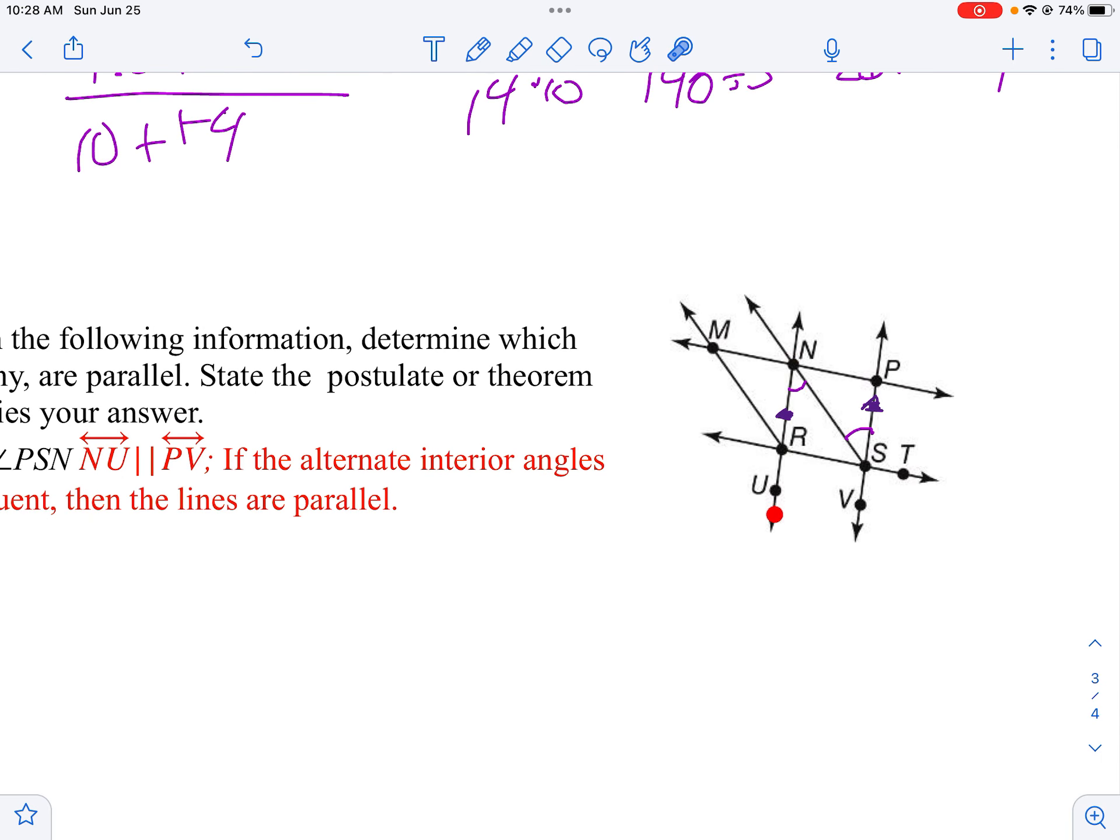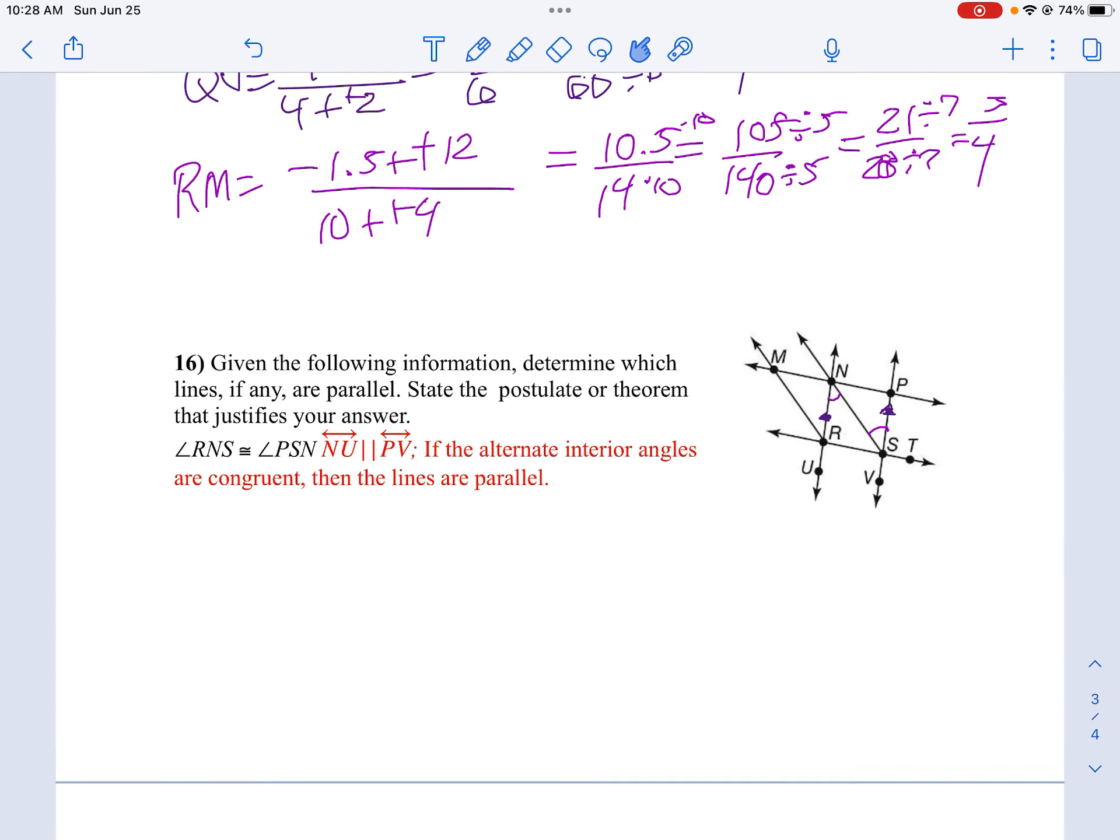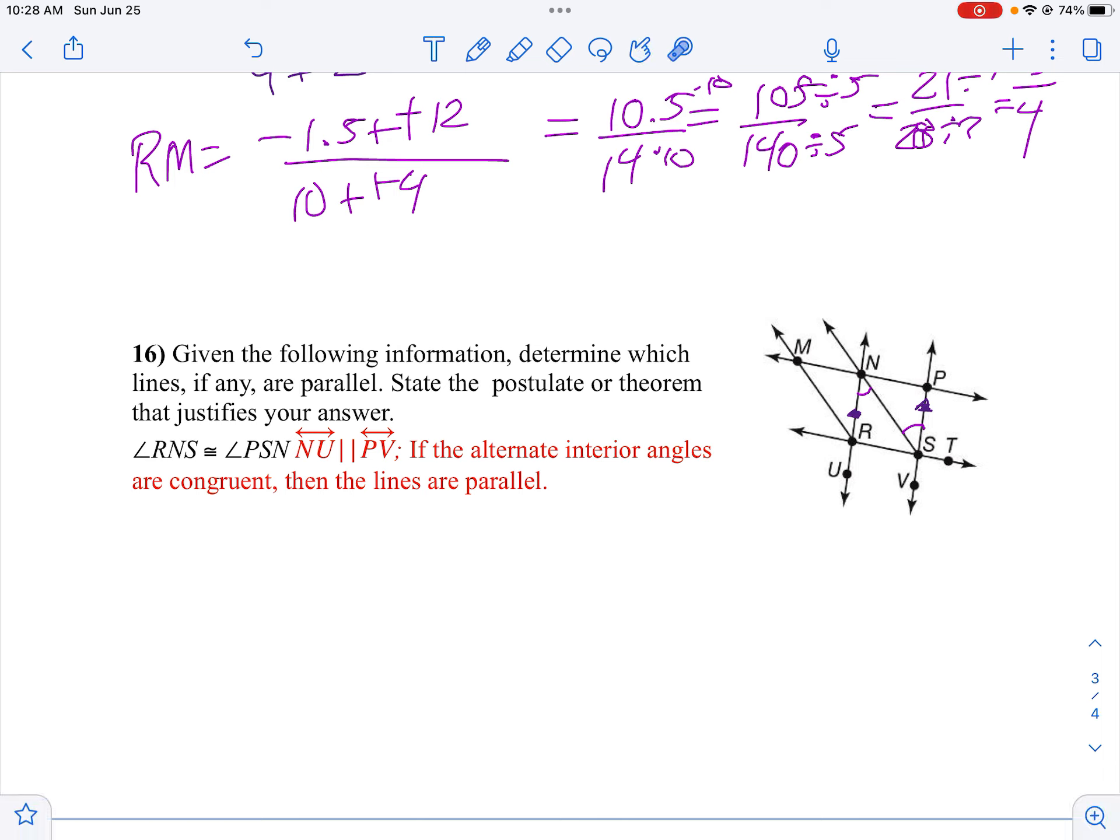It is parallel to PV. And once again, you can use any two points on that line and be correct. And then why? Well, take a look. Because the alternate interior angles are congruent. That's what makes these lines parallel.